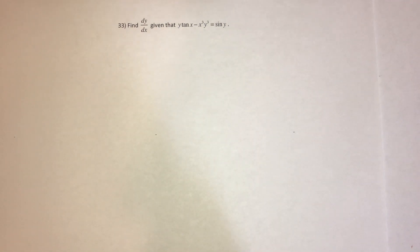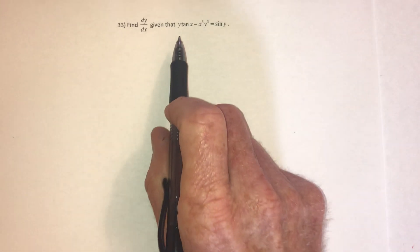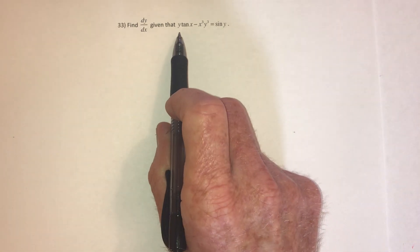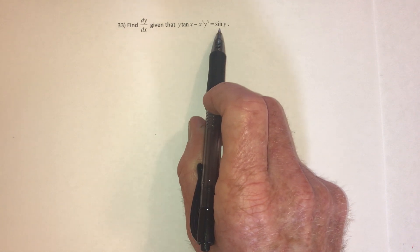So here we get to practice implicit differentiation. In other words, we can't solve for y and just say y equals. You just need to start taking the derivative on the left side and the right side.